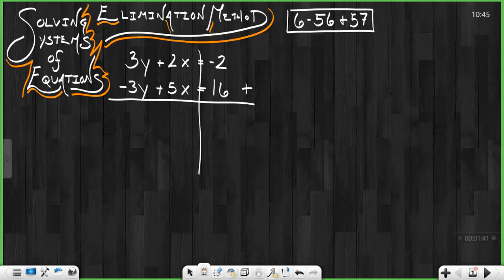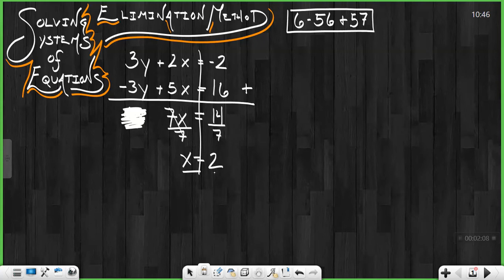And watch what happens when we do. If I add 3y plus negative 3y, I get 0 y's. If I add 2x plus 5x, I get 7x. And negative 2 plus 16 gives me 14. And really this 0y, we don't need. That's gone. It got eliminated, hence the elimination method. And now we're left with one equation that says 7x equals 14. I can solve that by dividing by 7 on both sides to see that x equals 2. And that is the solution for x.